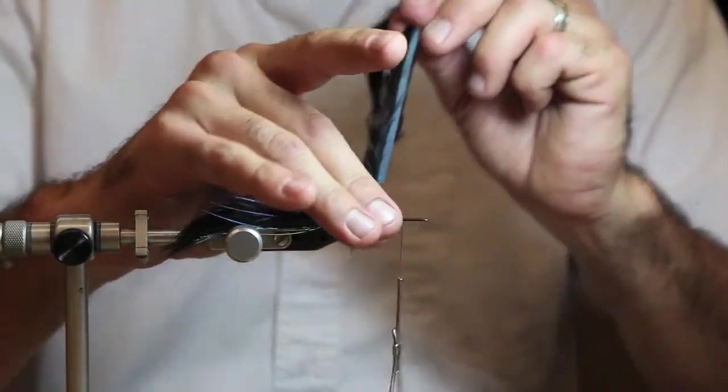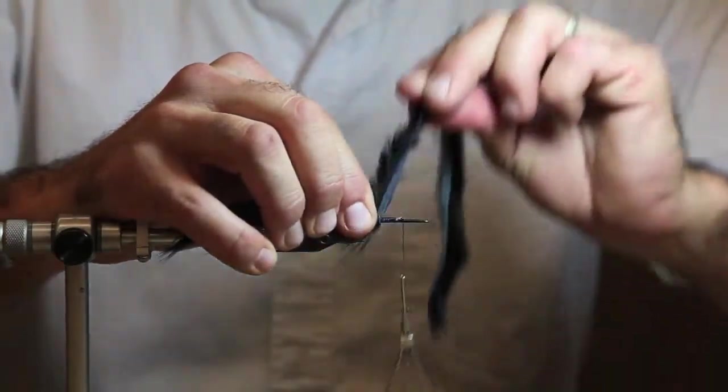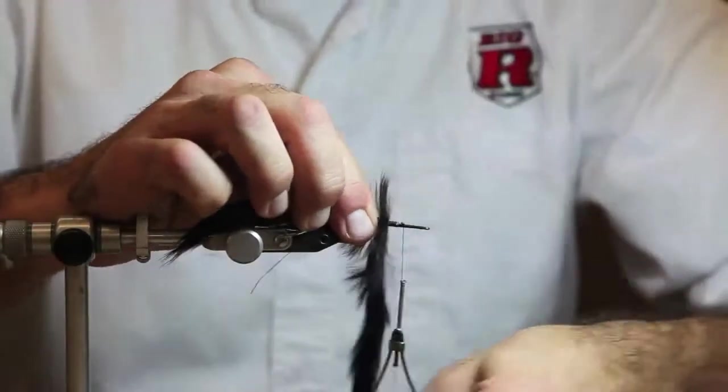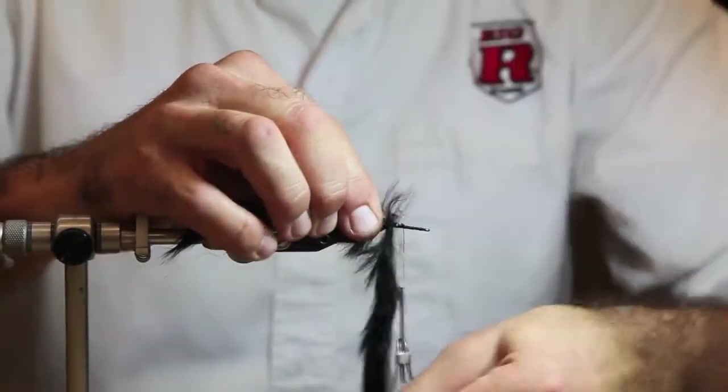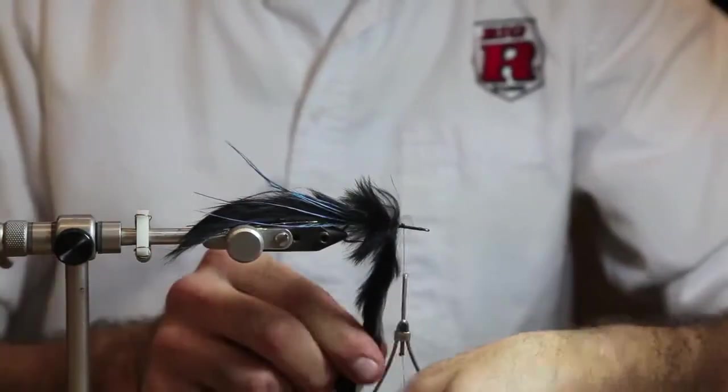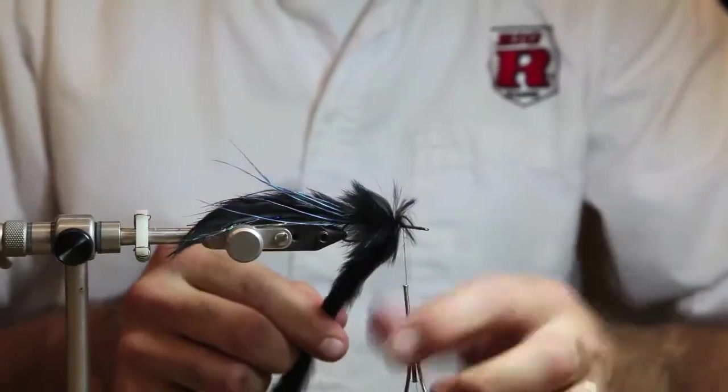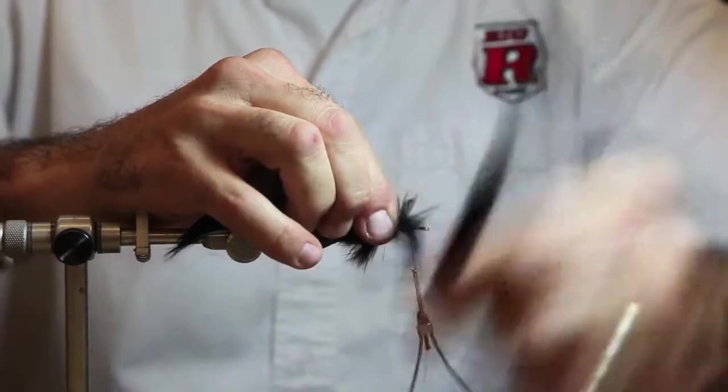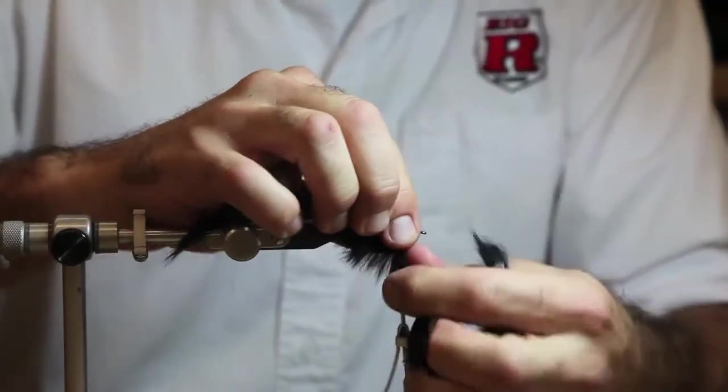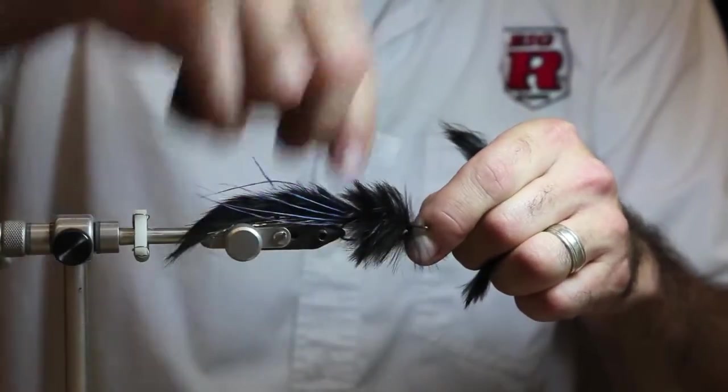So as we wrap this bunny, you want to pull your fibers back. And as you wrap forward, they'll wrap on top of themselves and it'll help pull these fibers back. So then as you wrap forward, tie this off.